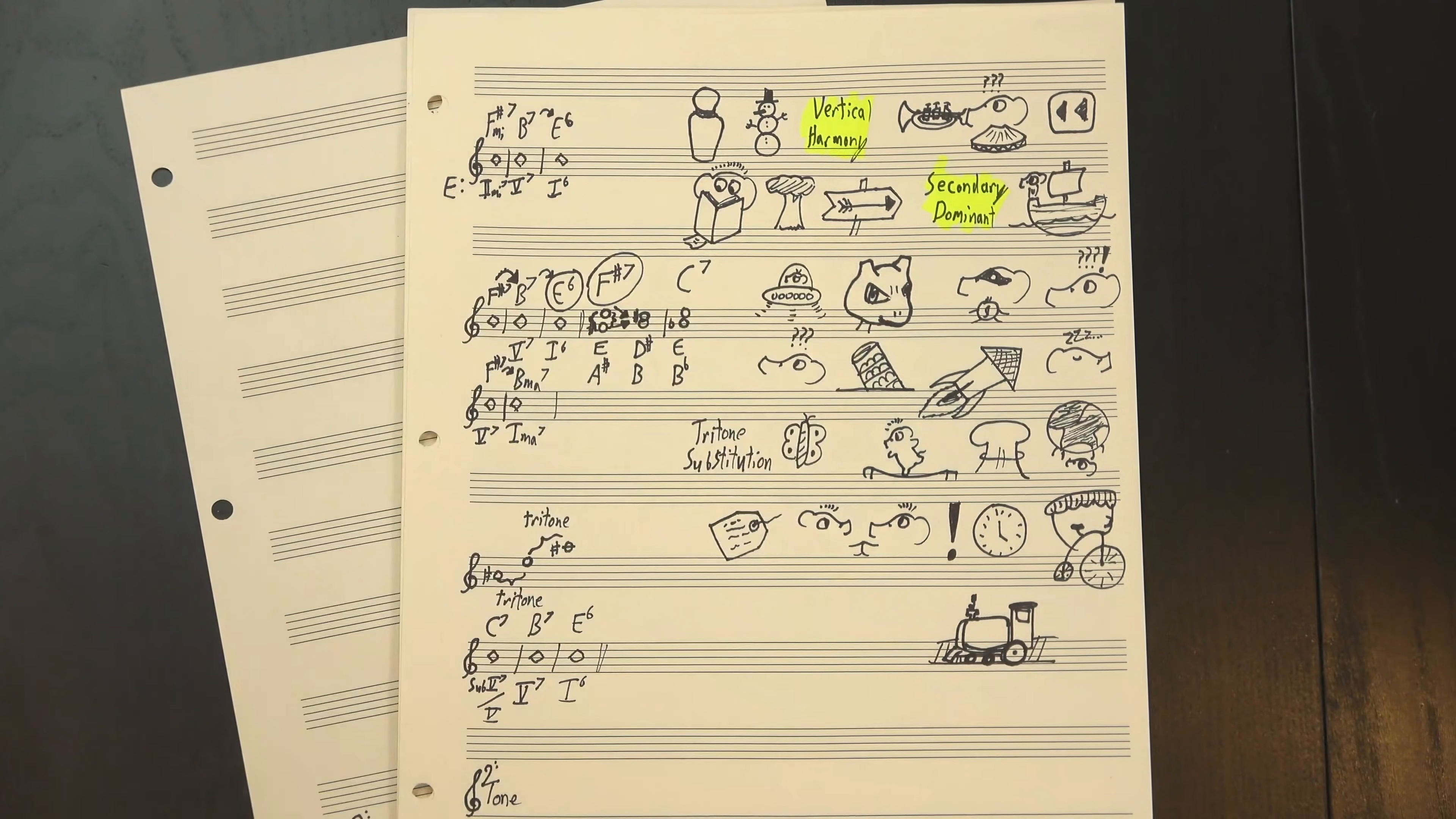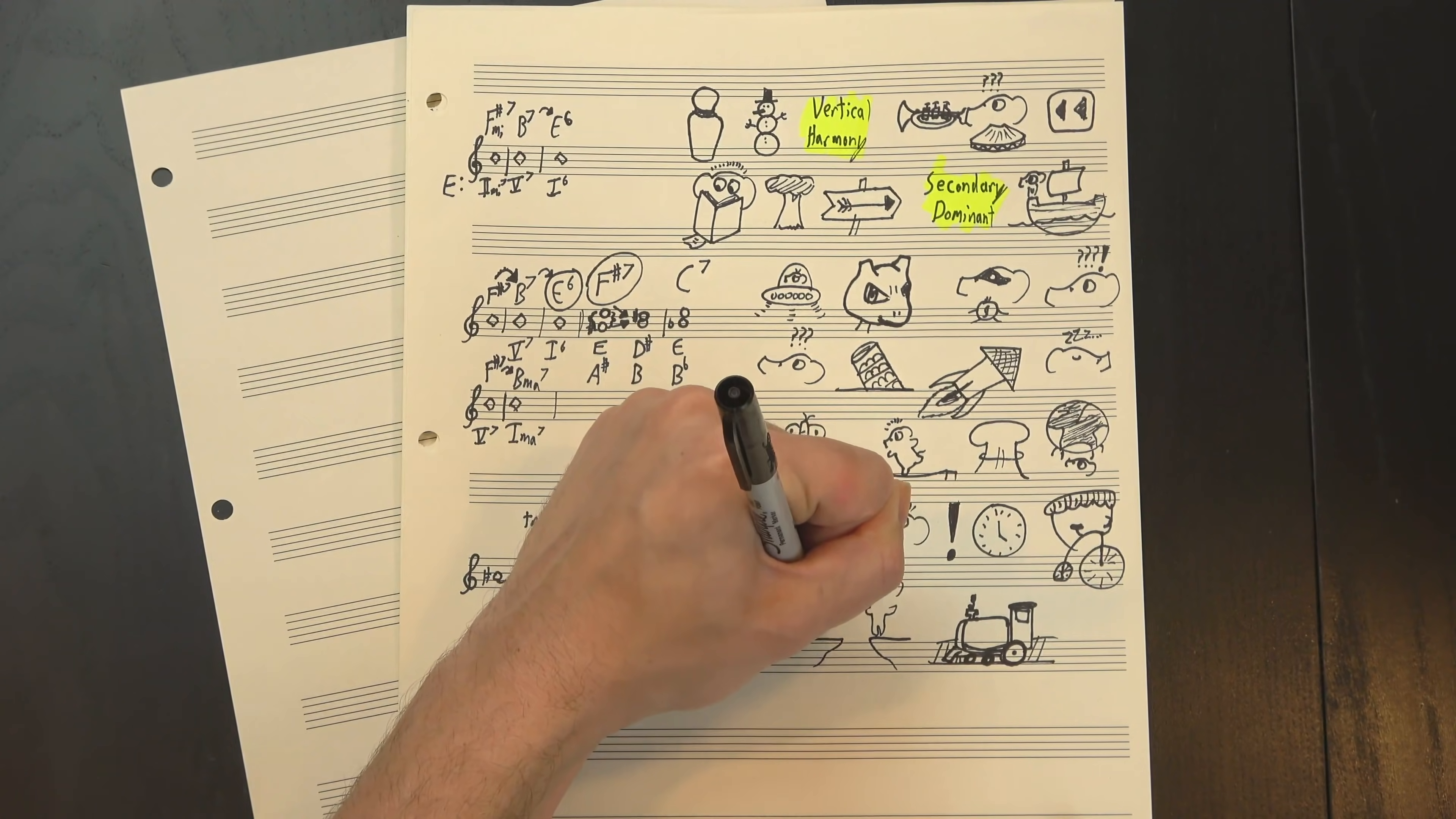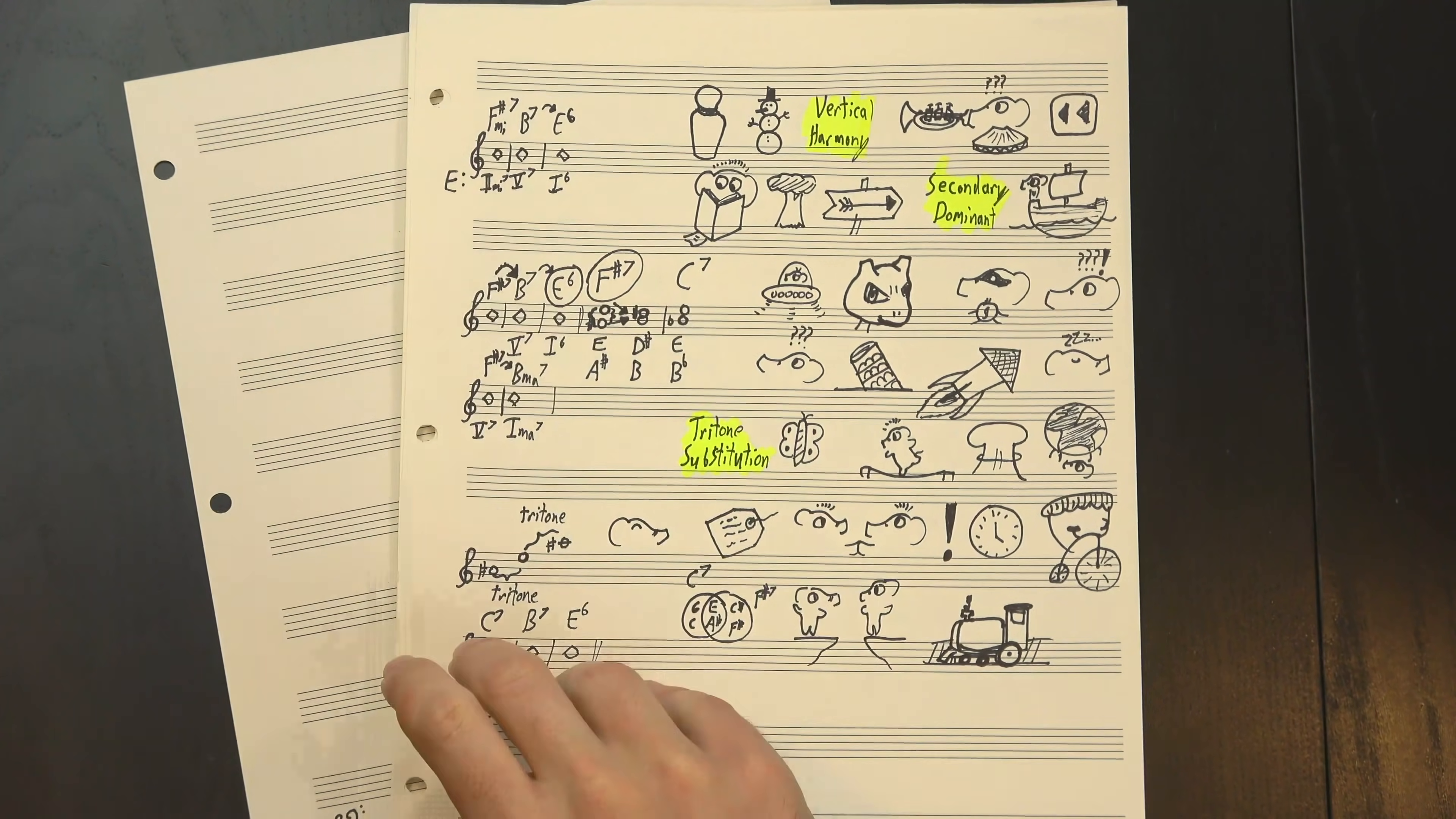This is what's called a tritone substitution. I think technically the name comes from the fact that the roots of the two dominant chords are a tritone apart, but I like to think of it as just substituting based on a shared tritone. That feels neater to me.